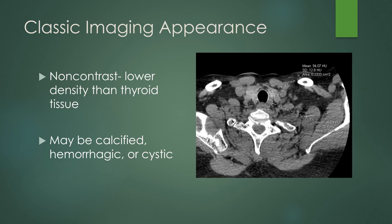Here it is in a little bit more detail. On the non-contrast images, you'd like the nodule to be lower in density than thyroid tissue — that thyroid tissue is more hyperdense. You can see this nodule posterior to the left lobe of the thyroid gland is hypodense compared to the gland itself. Parathyroid adenomas tend to be hypodense compared to normal thyroid tissue without contrast. Remember, however, parathyroid adenomas can be calcified, hemorrhagic, or have cystic or fatty changes within them, which may give them a more heterogeneous density.